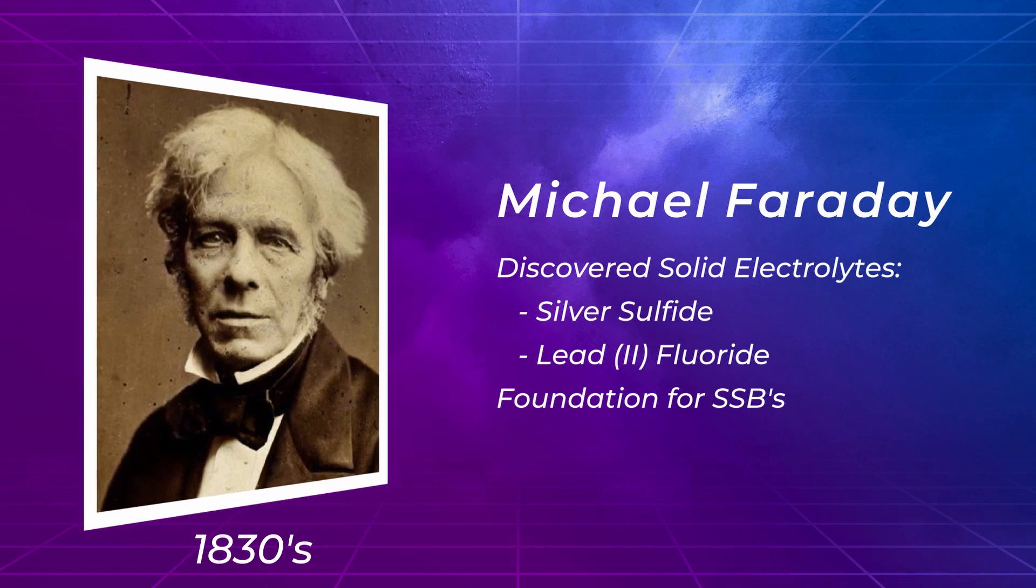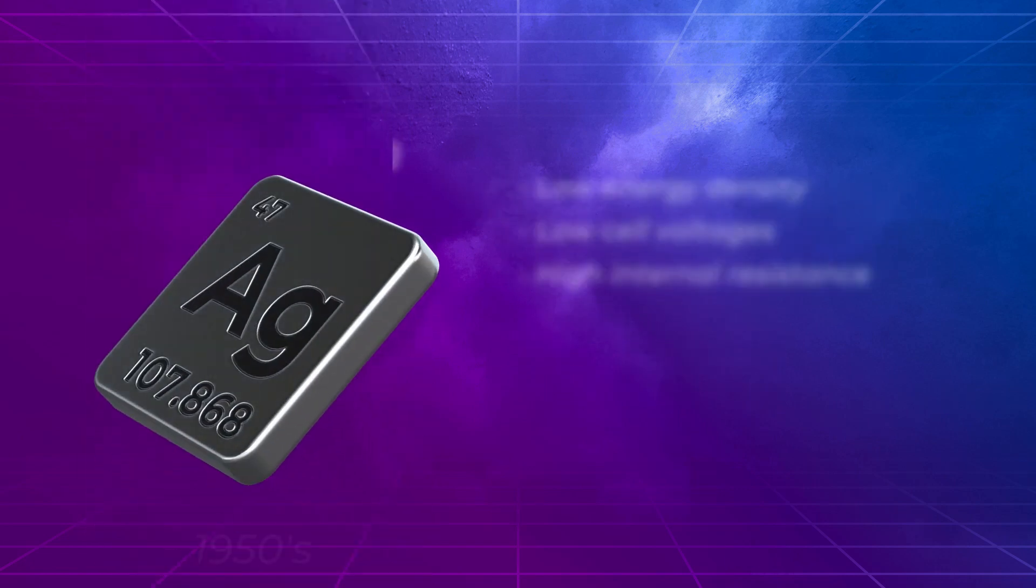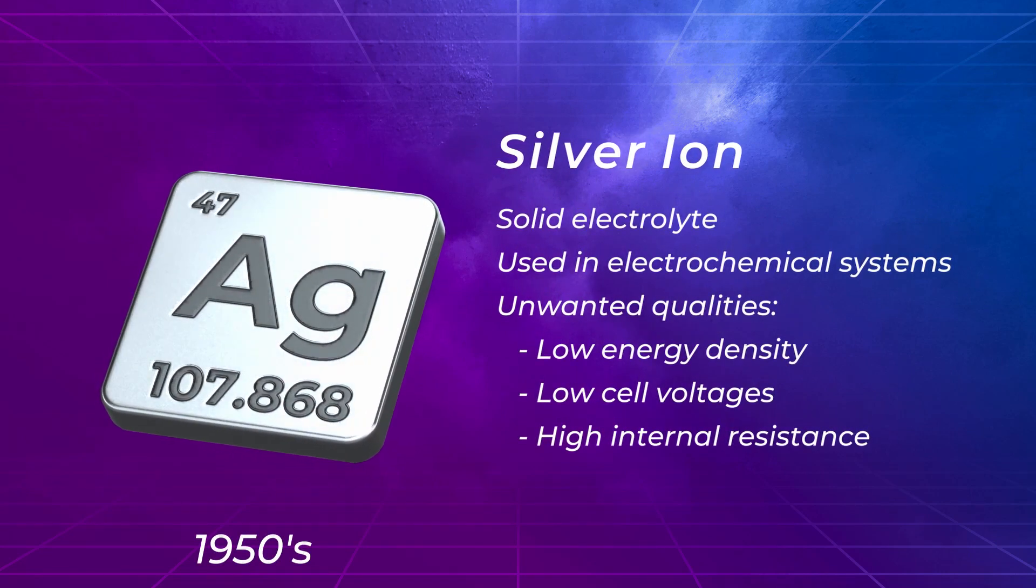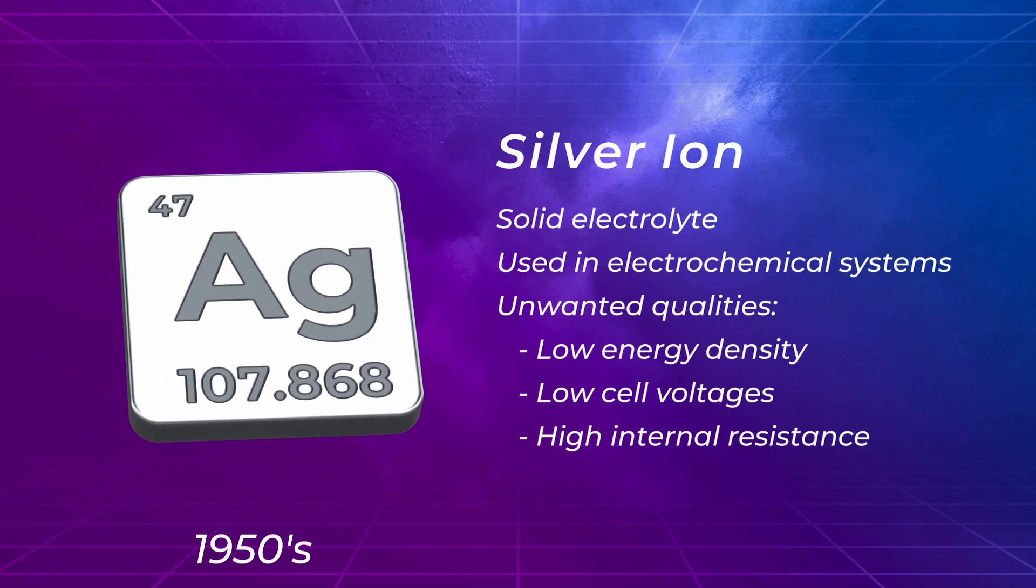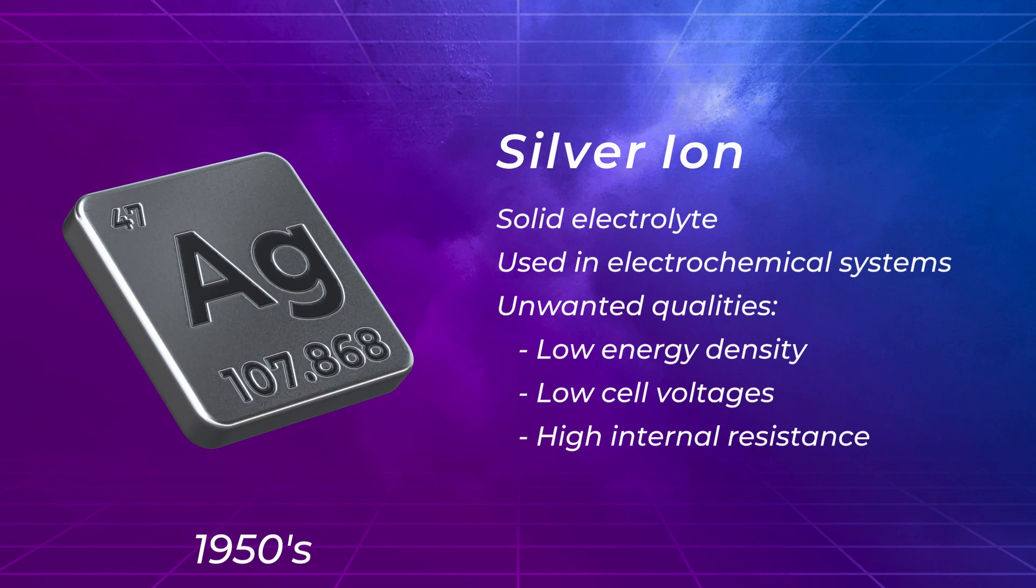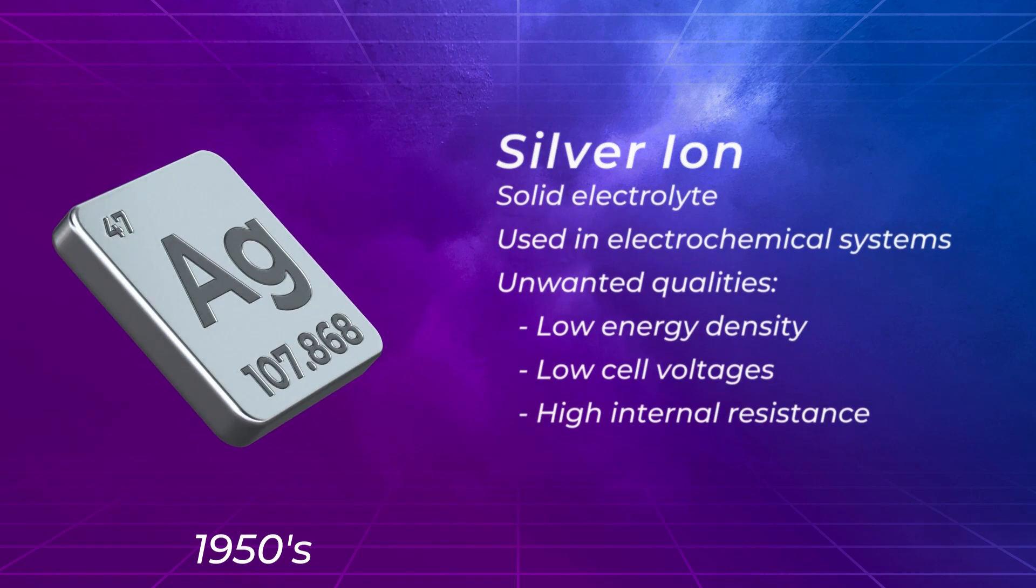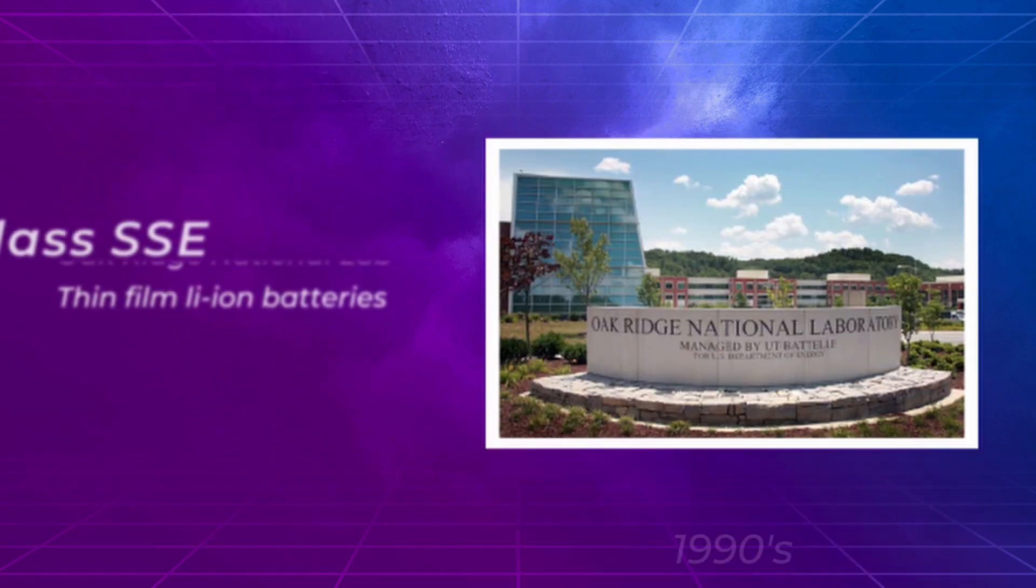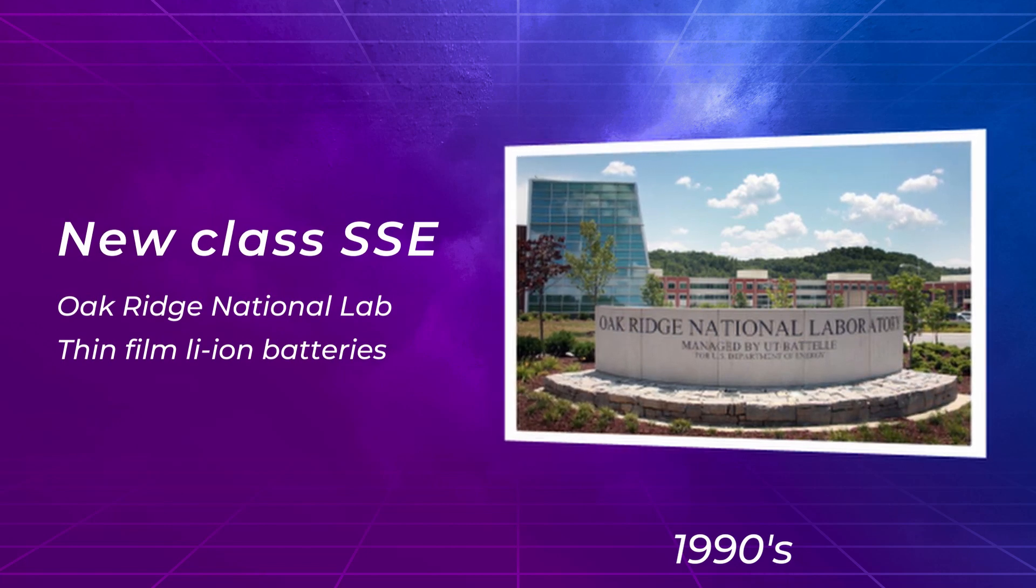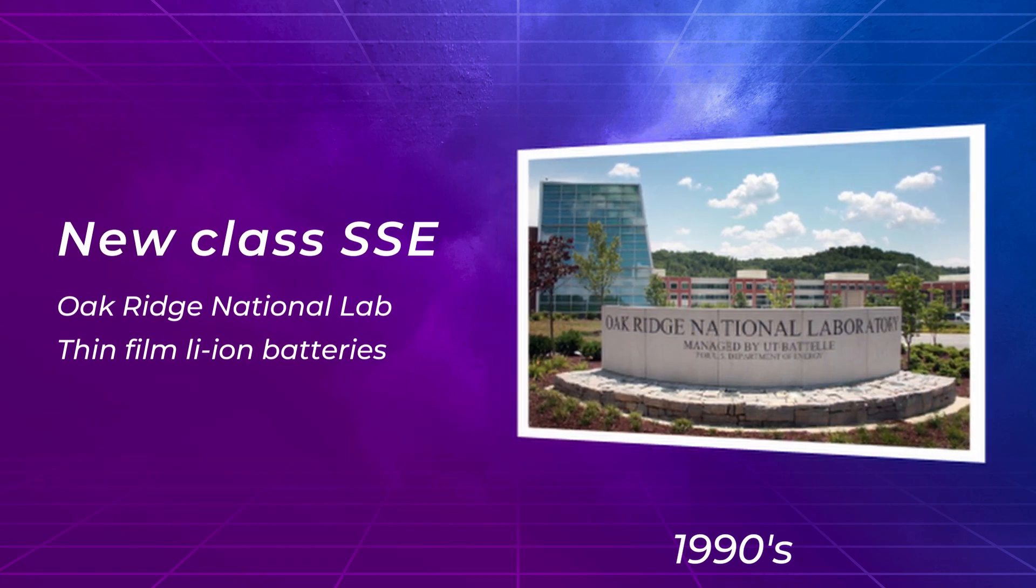By the late 1950s, several electrochemical systems used a silver ion as the solid electrolyte, but it had some unwanted qualities including low energy density and cell voltages and a high internal resistance. In the 1990s, a new class of solid-state electrolyte emerged, developed by the Oak Ridge National Laboratory, which was then used to make thin-film lithium-ion batteries.